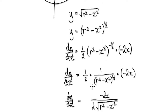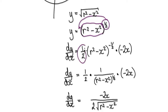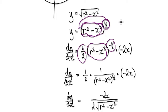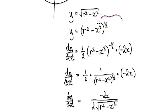Using the chain rule, imagine this as being like a bubble — it is inside a bubble. When you differentiate it, the half comes down. The bubble stays intact, and then the power gets minused by one, so half take away one will be negative a half. And then you've got to times the derivative of the bubble itself. The bubble is r squared minus x squared, so we've got to times the derivative of the bubble itself.